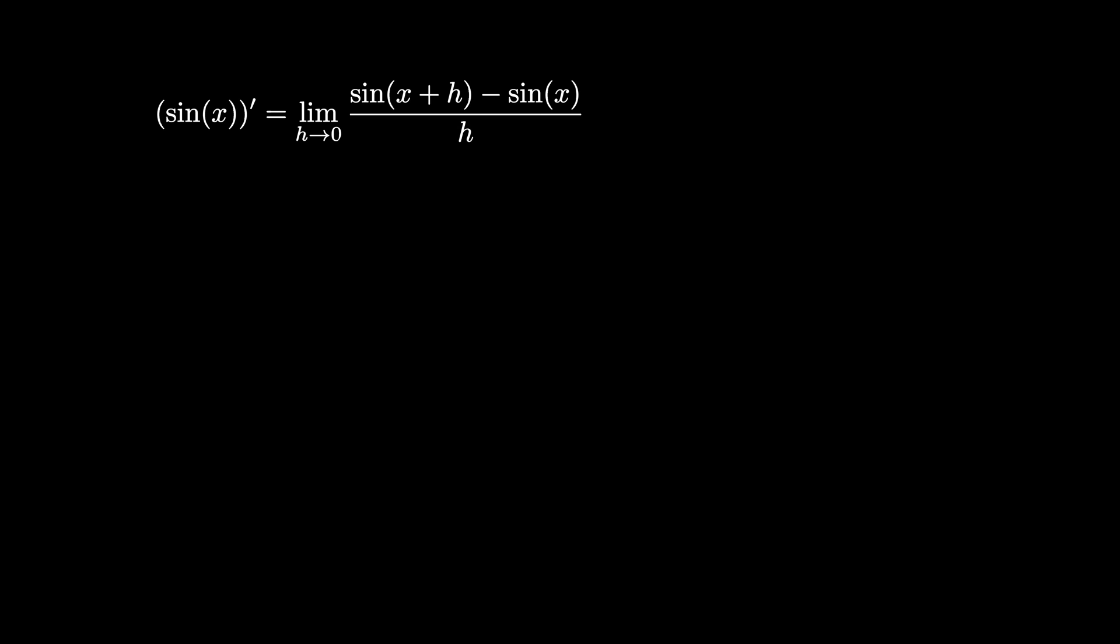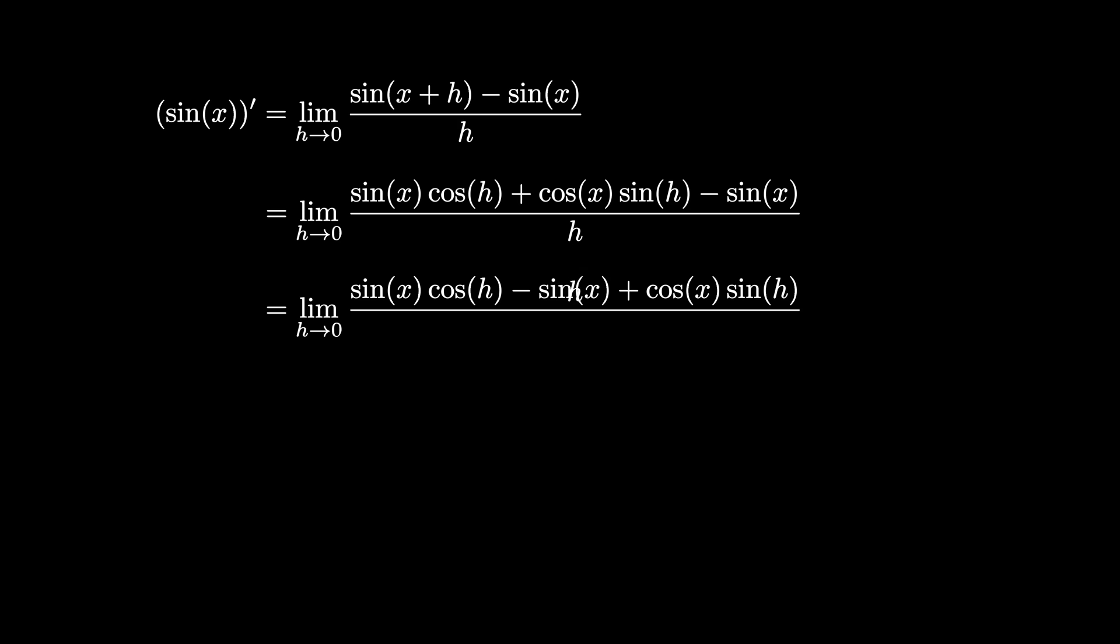Using the sine sum angle formula, we see that this is equal to the limit as h goes to 0 of sine of x times cosine of h plus cosine of x times sine of h minus sine of x all over h. Then we can rearrange the terms in the numerator of this fraction. We can split the fraction into the sum of two fractions, and recognize that the limit of a sum is equal to the sum of two limits.